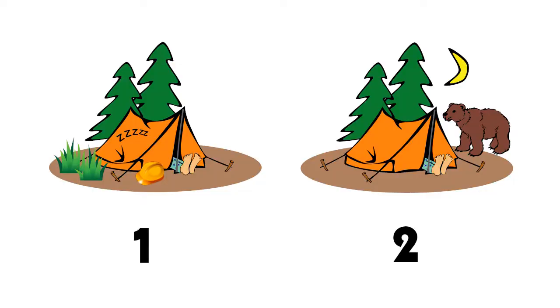You can also think about it kind of like a spot the difference game. Have you ever done these where you try and find the differences between two pictures? If we had this first picture we could describe that: there's a guy in a tent and he's sleeping and there's some grass and a helmet and some trees. Then we could describe the differences. In the second picture there's no grass or helmet but there's a moon and a bear. That would be a lot faster than trying to describe each picture separately.